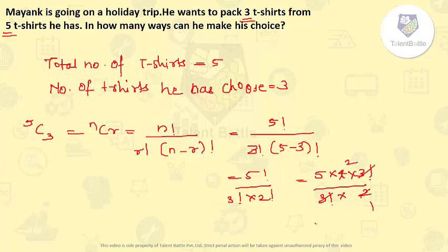So 3 factorial cancels. 2 twos are 2. So the total number of ways he can choose is 10. 5 into 2 that is 10.